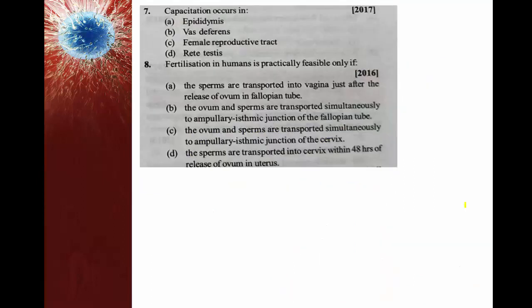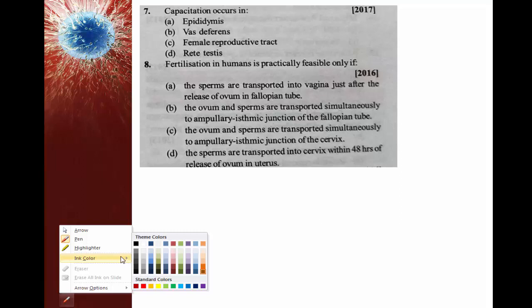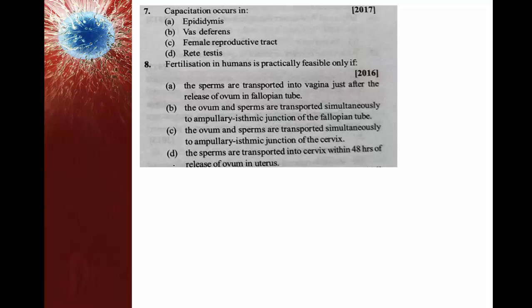Capacitation occurs in: epididymis, vas deferens, female reproductive tract, or rete testis? Before marking the right option, it is necessary to know the meaning of capacitation. During sexual intercourse, semen — a mixture of seminal plasma and sperms — is discharged into the female reproductive tract.